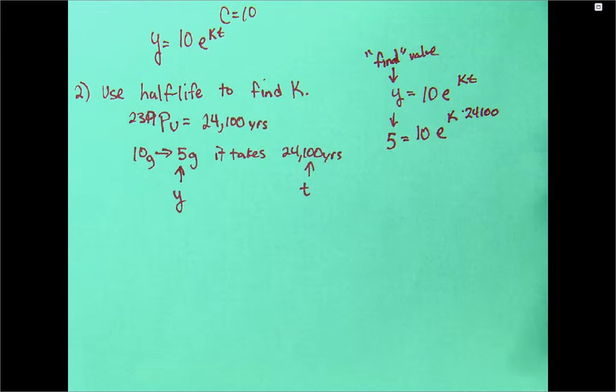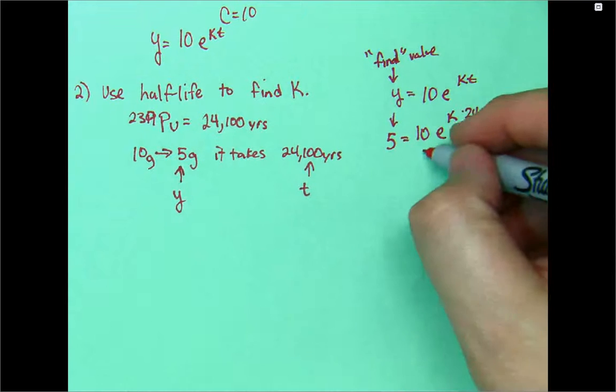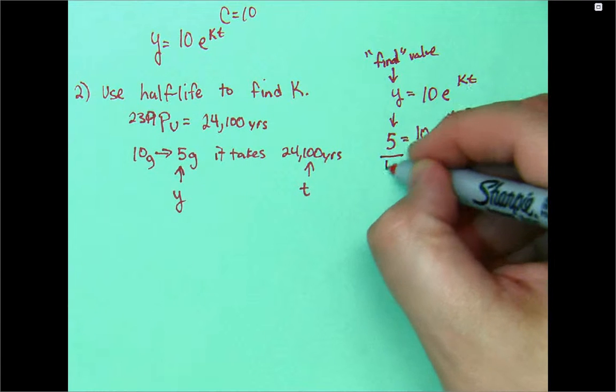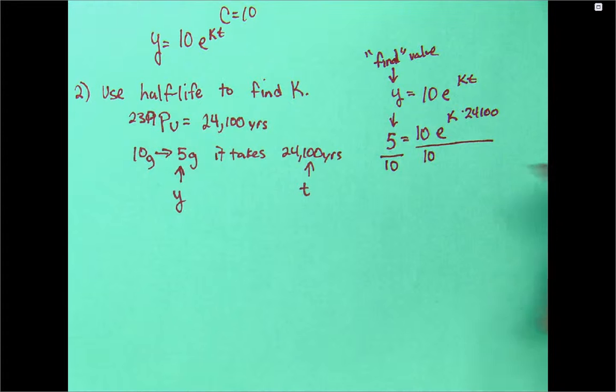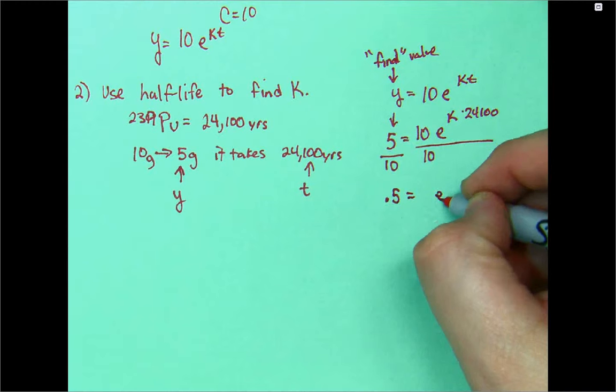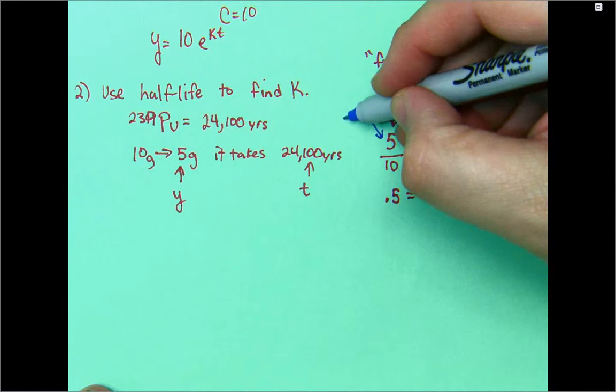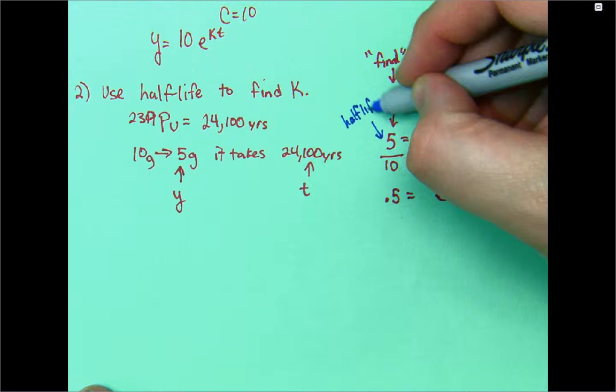Now, I have an exponential equation here. Not yet, but you're right, we're going to use the natural log in this case. What we're going to do first is divide by 10. Five divided by 10 is 0.5. And that's equal to E to the K times 24,100 power. And I'll just put, to remind here, that's your half-life.